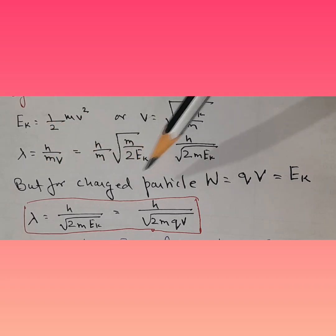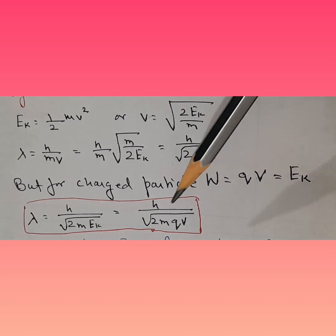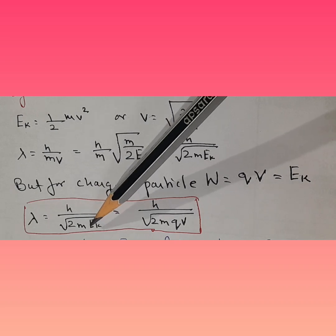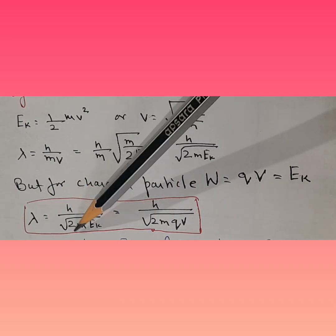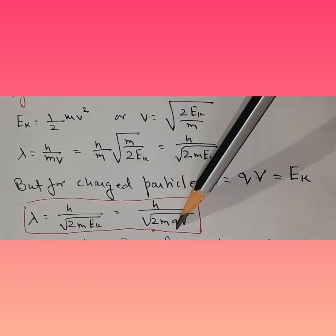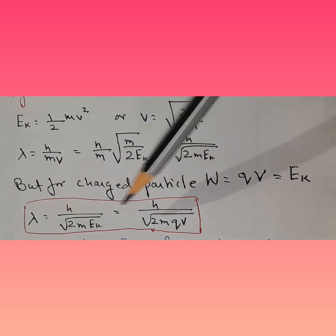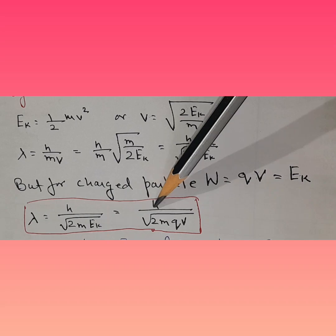But for charged particle, W is equal to qV. We know that, so energy can be converted into qV. So if we talk in terms of charged particle, this takes the form of qV. So we have two formula, this is for particle, this is for charged particle. So these are again two formulae which we have got to keep in mind for numericals.